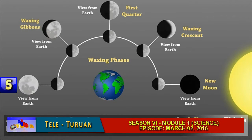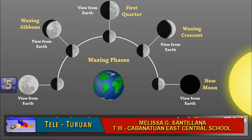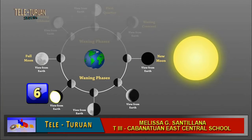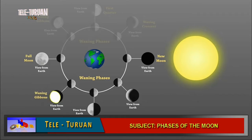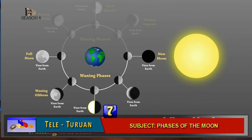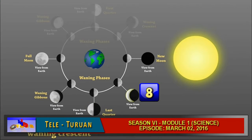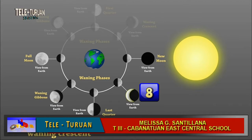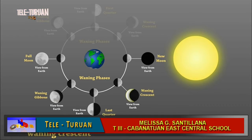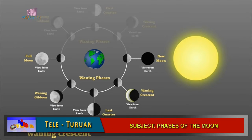That's correct. Five, it's full moon. Six, it's waning gibbous. That's correct. And this number seven is last quarter. Number eight is what we call the waning crescent. And the last will begin again the new moon.